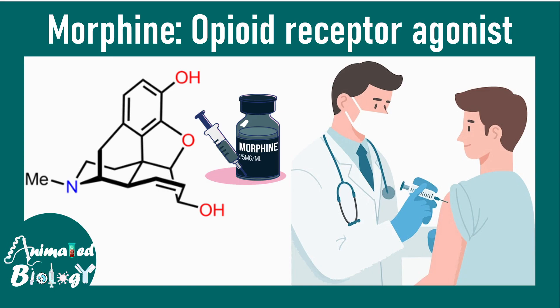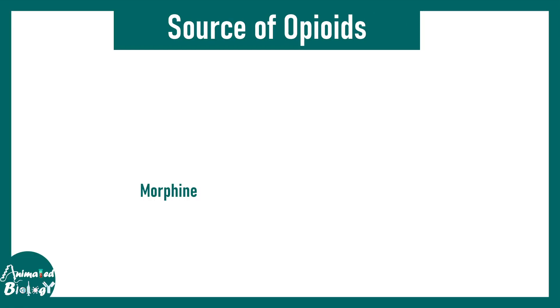In this video, we'll talk about morphine. Morphine is a colloquial painkiller or a drug that can reduce pain, so it is used as an analgesic. Have you ever wondered how morphine works at a molecular level and what its effect is in the human body? If you want to know more about it, this video is for you.